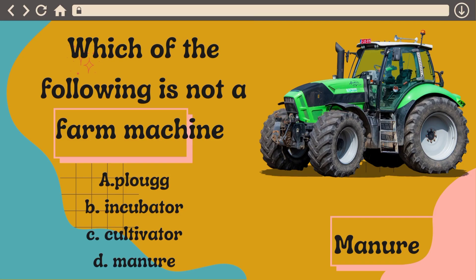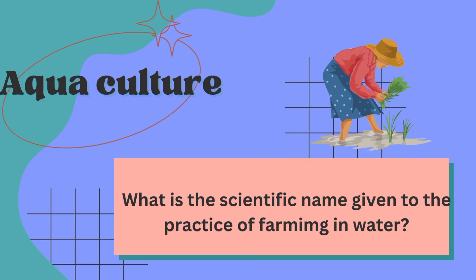And some of these questions are: which of the following is not a farm machine? We have different farm machines, but what I'm seeing there is manure. Manure is a fertilizer, it's not a farm machine. It makes our plants grow. The rest of them, like incubator, they are all farm machines.